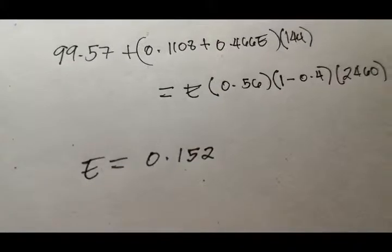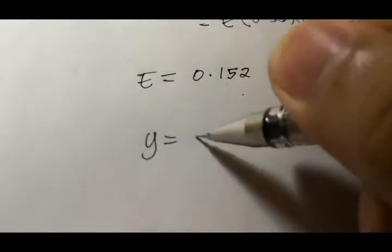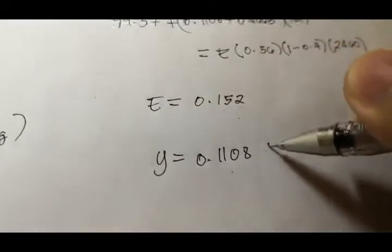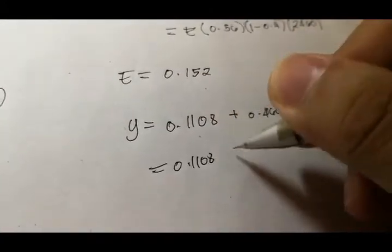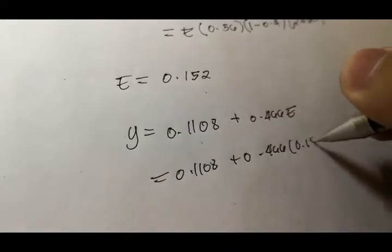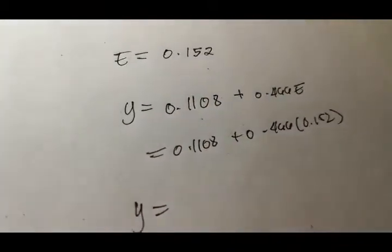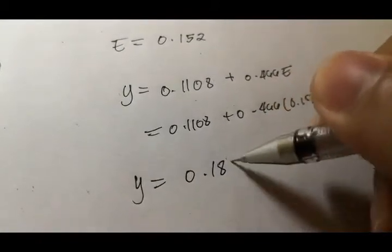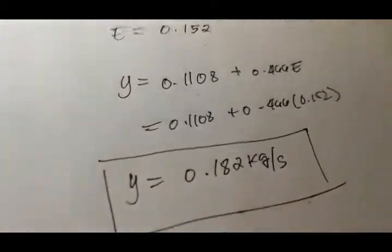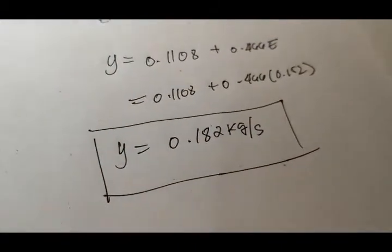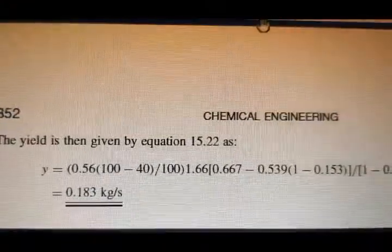So since we have E, we can now get the crystal yield. So we plug in the values. Y is equal to 0.1108 plus 0.466 times 0.152. You will approximately get around 0.182 kilograms per second of your sodium acetate trihydrate crystal. Colson's answer is around 0.183.